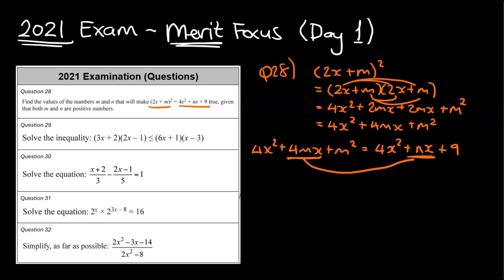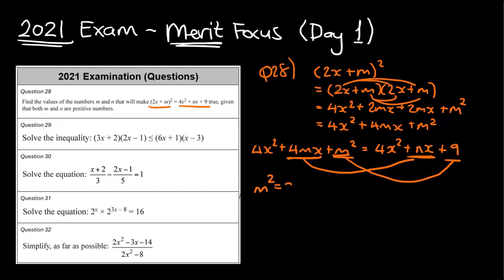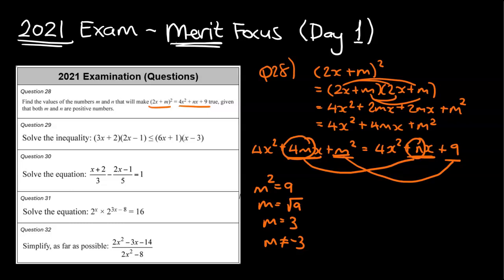The 4mx in the middle is the same as nx. And m squared is the same as 9, so m squared equals 9, meaning m equals the square root of 9, which is positive 3 — ignoring negative 3 since the question says positive values. Now that I know m, I also know 4m equals n, so n equals 4 times 3, which equals 12. So m equals 3 and n equals 12.